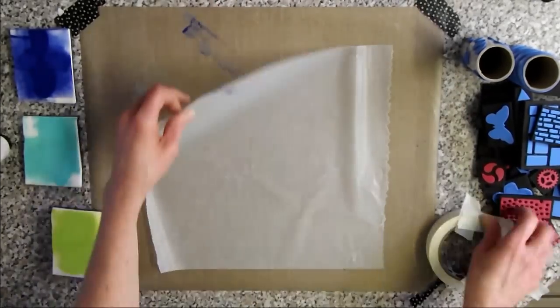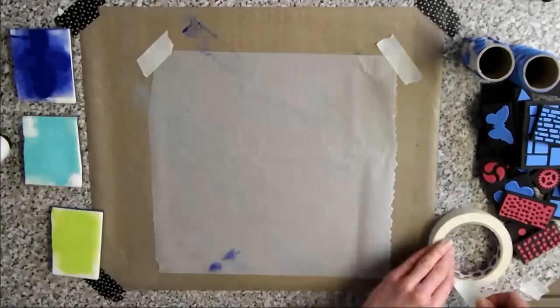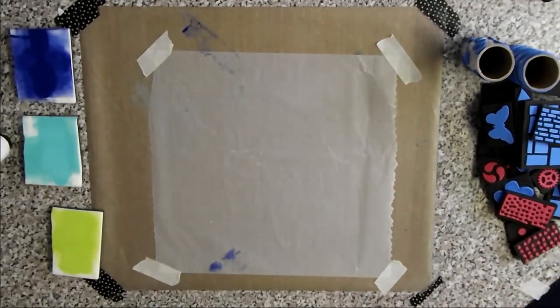The wax paper has a shiny and a matte side. I prefer to stamp or paint on the matte side where there is no wax. That's why I turned the page over.